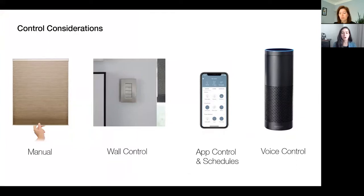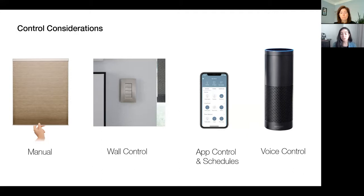Let's talk about automated control options. Wall controls allow you to operate shades with the quick push of a button, whether you live there or you're just a guest visiting the home. These can be low-voltage controls or something as simple as a battery-powered remote. It's easy to use apps on your phone or tablet to move your shades no matter where you are in the world. You can set up specific things to happen at certain times — schedule the shades to raise at 7am, or lower every day at noon to protect your home from UV. And now you can control it all without touching a thing by simply using voice control.